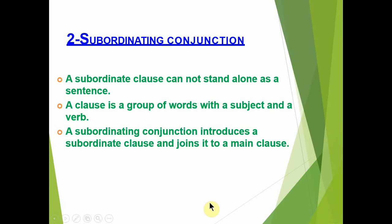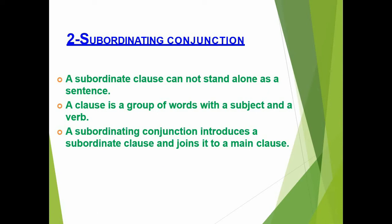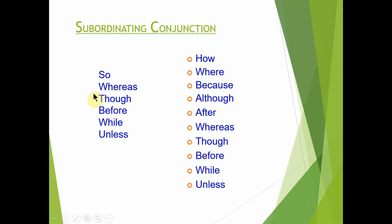Subordinating conjunctions وہ ہوتے ہیں جو main یعنی independent clause کو subordinate یعنی dependent clause سے جوڑتے ہیں۔ Subordinate clause اکیلا sentence نہیں بن سکتا — اس میں subject اور verb ہوتا ہے لیکن یہ main clause پر depend کرتا ہے۔ مثالیں: because, although, after, whereas, though, before, while, unless, how, where, so that۔